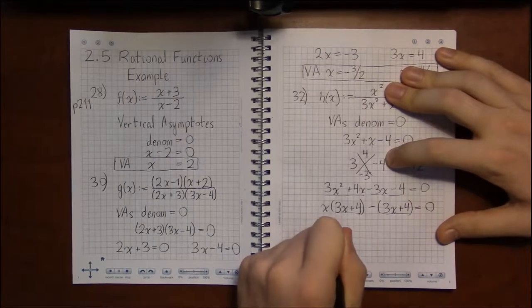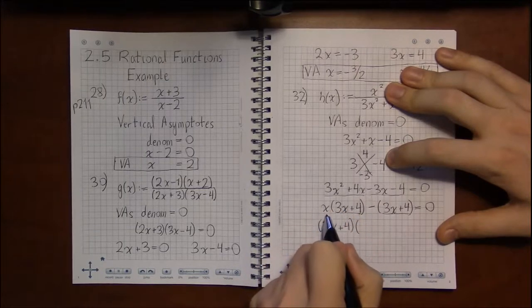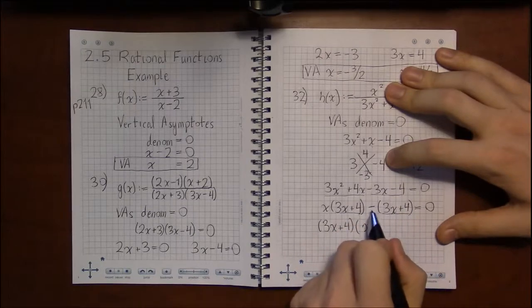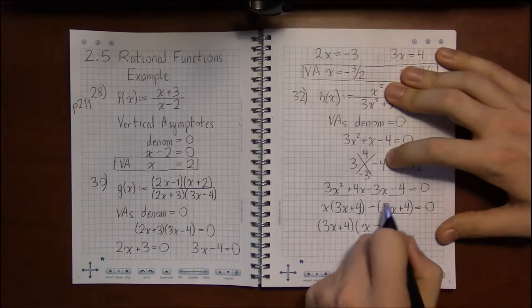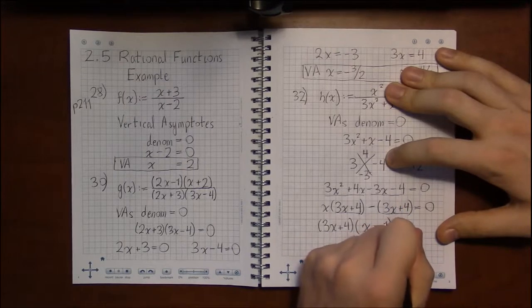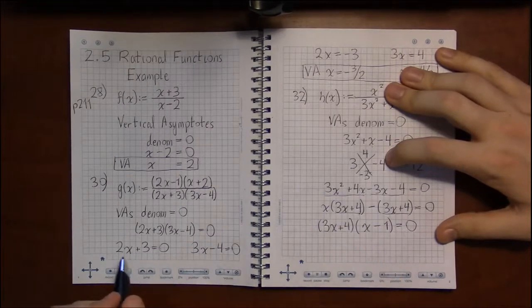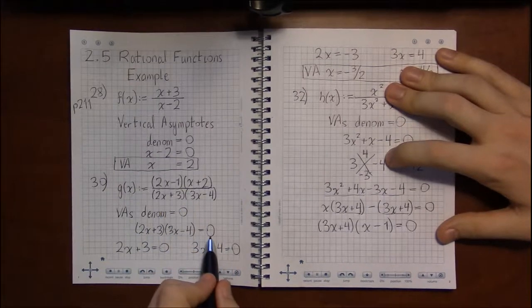Pulling 3x plus 4 out leaves me with x in the first term and just a minus 1, a placeholder for the second term. So now we're back to where we were on problem 30. We've got a product of two things being equal to zero.